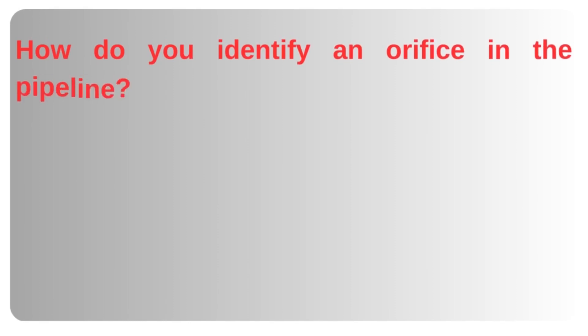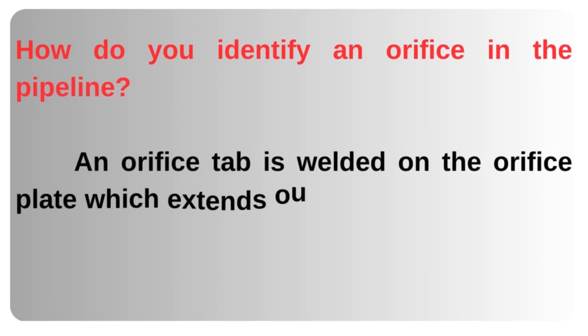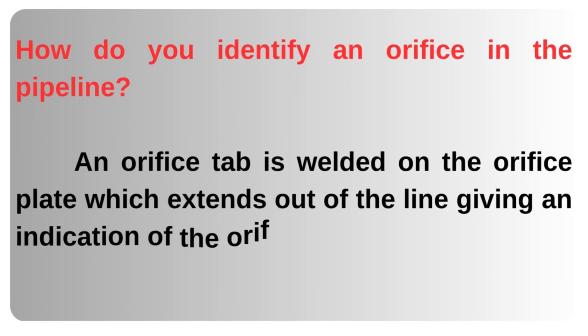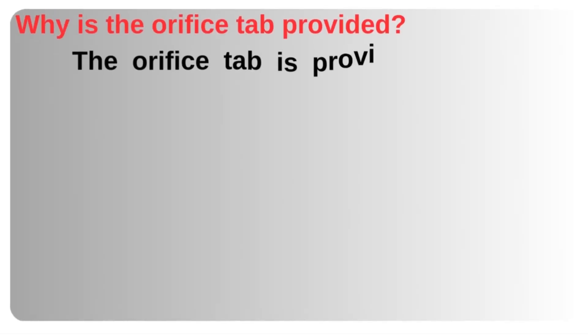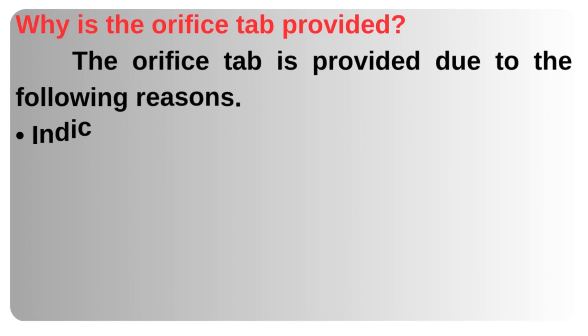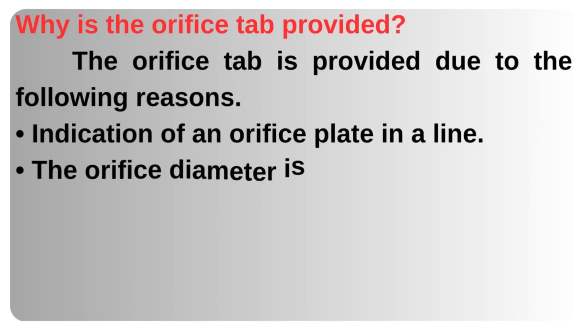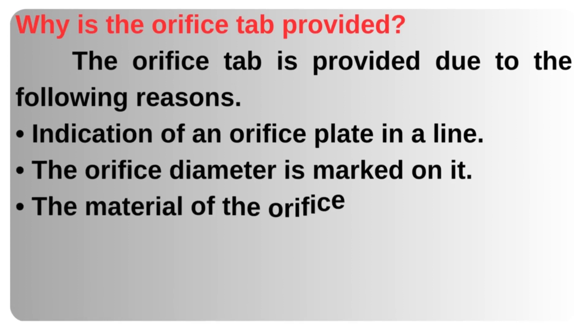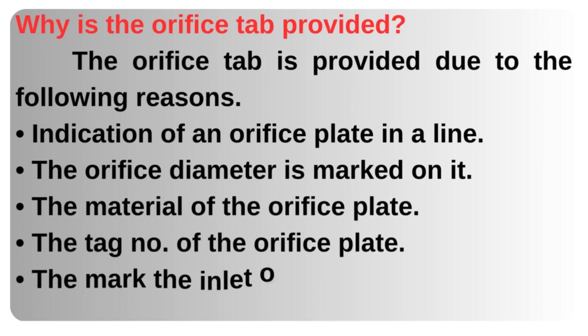How do you identify an orifice in the pipeline? An orifice tab is welded on the orifice plate, which extends out of the line giving an indication of the orifice plate. The orifice tab is provided for the following reasons: indication of the orifice plate in a line, the orifice diameter is marked on it, the material of the orifice plate, and the tag number of the orifice plate.